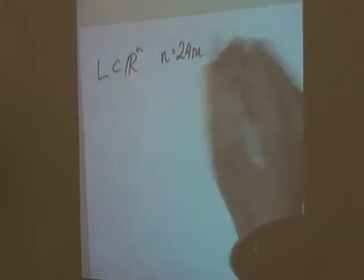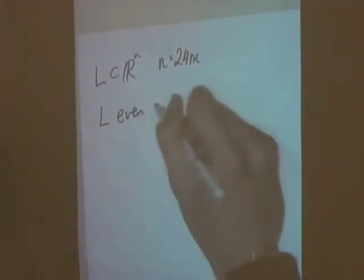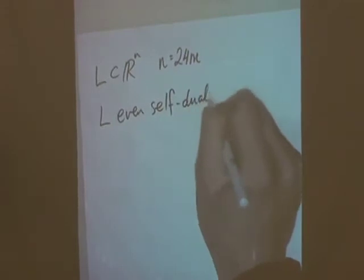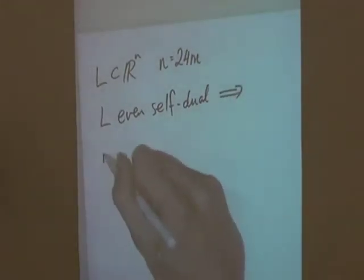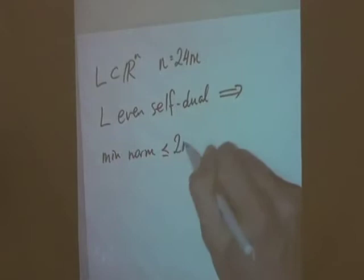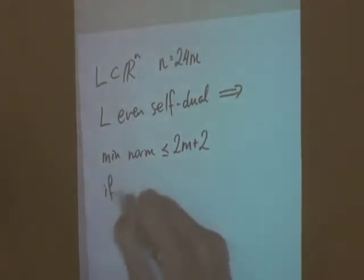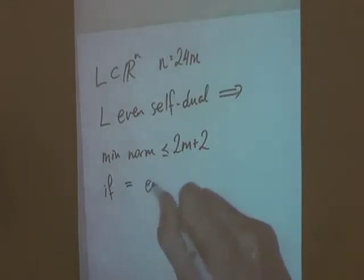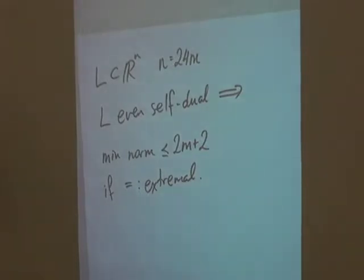So we saw last time that if you have a lattice L in R^n, let's say n is 24m, and L is even and self-dual, then the minimal norm is at most 2m+2, in which case it is called extremal, and the theta series is known exactly. Now, there are a few things that should be said about this. For one thing, we don't know any examples of such lattices satisfying this 24m condition where m is bigger than 2.